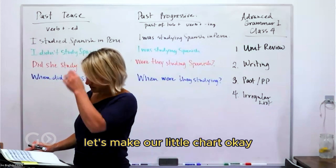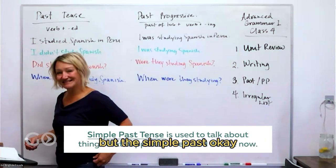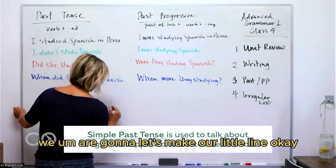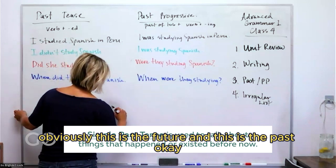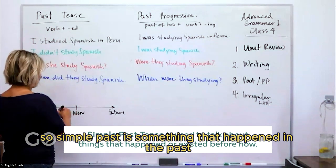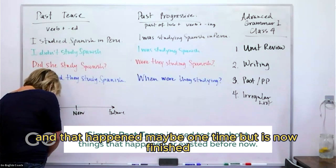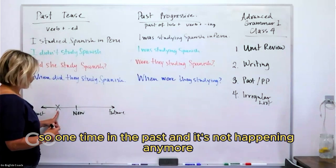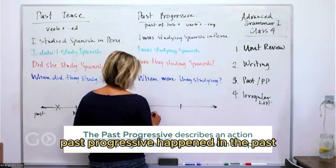Let's make a little chart. We have a timeline: this is now, this is the future, and this is the past. Simple past is something that happened in the past before today — it happened maybe one time and is now finished. It's done: one time in the past and it's not happening anymore.